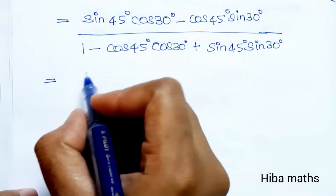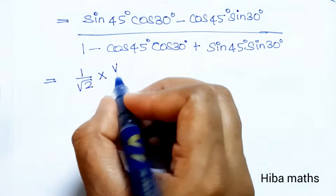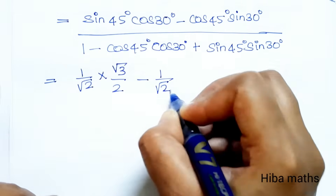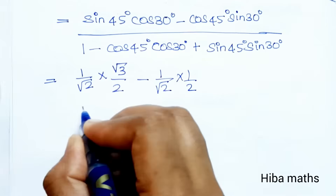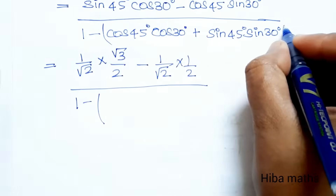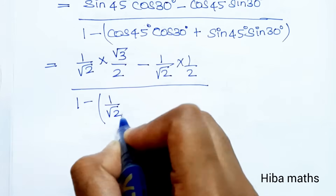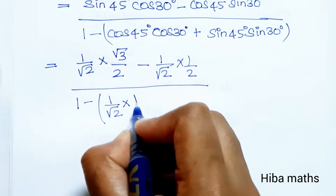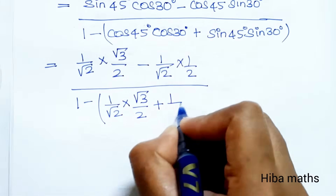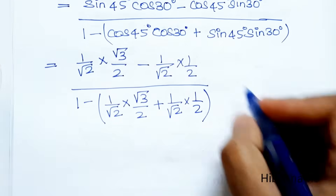Substituting known values: sin(45°) = 1/√2, cos(30°) = √3/2, cos(45°) = 1/√2, sin(30°) = 1/2. The numerator becomes (1/√2)·(√3/2) - (1/√2)·(1/2), and the denominator becomes 1 minus [(1/√2)·(√3/2) + (1/√2)·(1/2)].